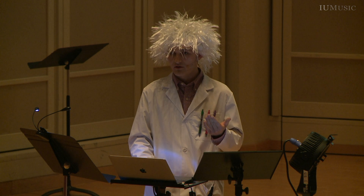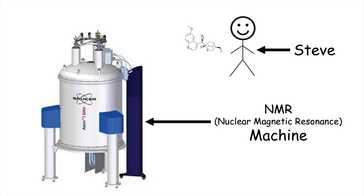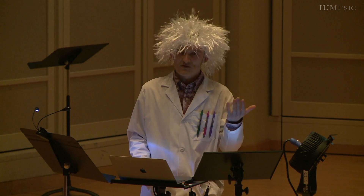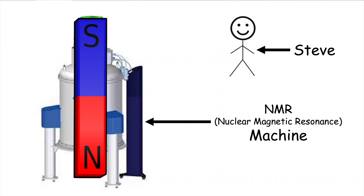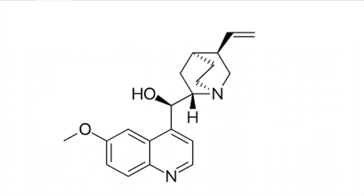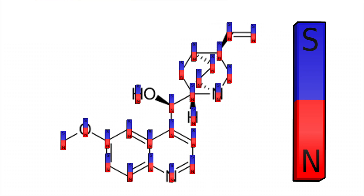So Steve is going to take our molecule and put it inside of an NMR, or nuclear magnetic resonance machine. And when he does this, what is this machine? Well, it's basically — I'm simplifying a little bit here — it's basically a really powerful electromagnet. And that's important because all of the atoms in our molecule are like little teeny tiny bar magnets. And when we put them inside an external magnetic field, they all align to face in the same direction as that dipole.